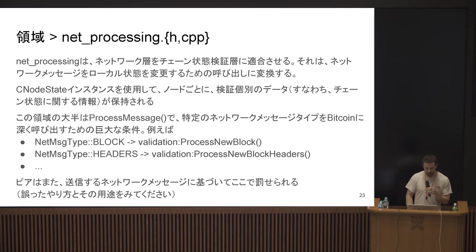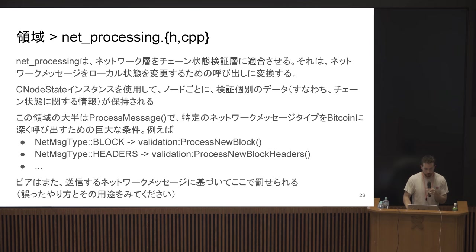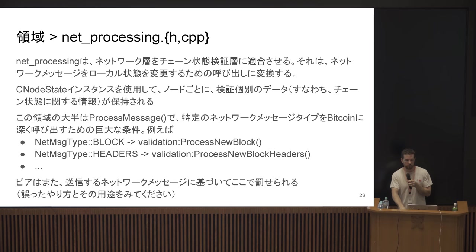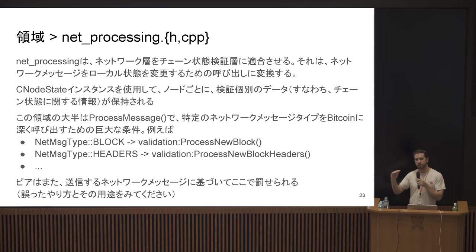Validation-specific data is maintained per node using CNodeState. If you open net_processing.cpp, you'll find one giant function called ProcessMessage, which is basically a case-statement way of handling every single P2P message. When we receive a block message, that translates into a call to ProcessNewBlock in the validation module. Peers are also penalized here based on bad behavior — you can grep for 'misbehaving' to see all the cases where we track bad behavior. If someone keeps spamming us with invalid blocks, we want to disconnect them at some point.